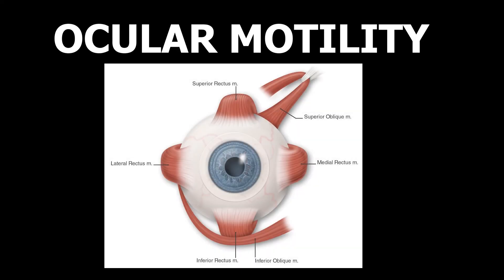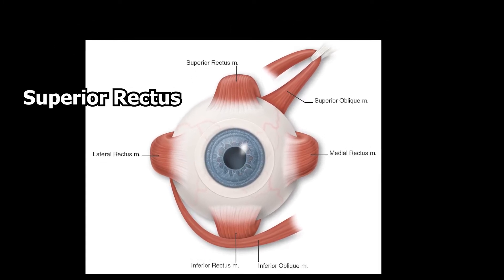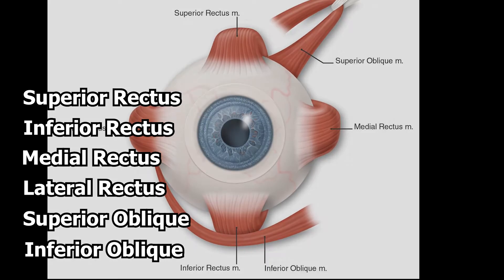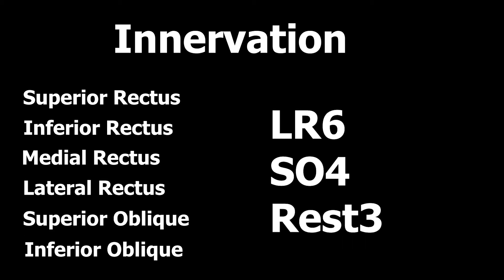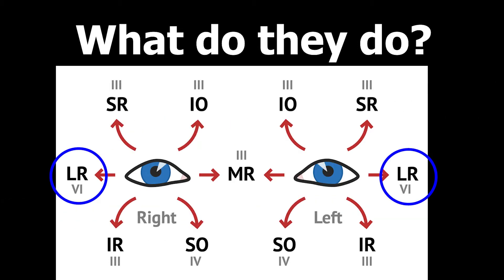Ocular motility — let's cover the eye muscles. There are four that are usually easy to remember and two that are a bit tricky: superior rectus, inferior rectus, medial rectus, lateral rectus, superior oblique, and inferior oblique. For innervation, the lateral rectus is innervated by cranial nerve six, the superior oblique by cranial nerve four, and all the rest by cranial nerve three.